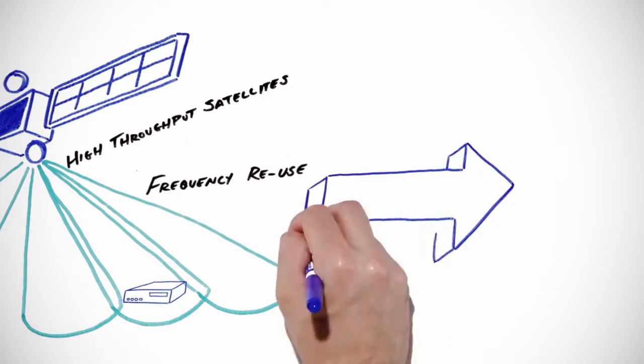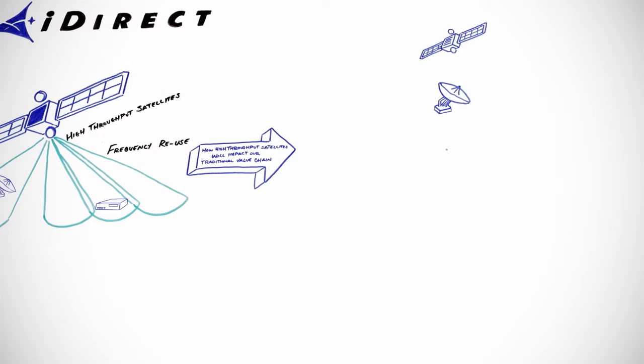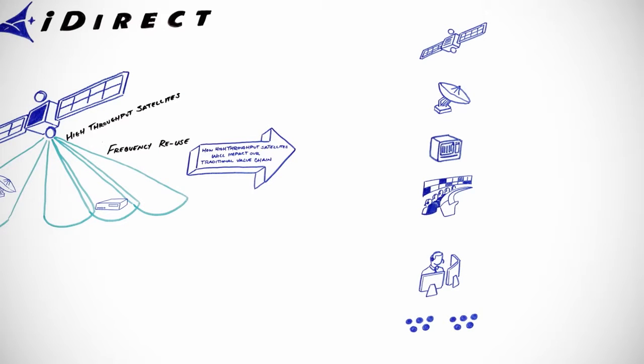So now let's take a look at how high throughput satellites will impact our traditional value chain. We need to focus on the business models that are evolving to make high throughput capacity available. For simplicity, let's break it into six key elements.